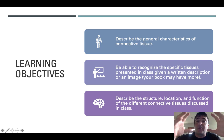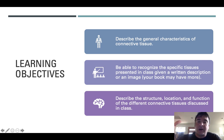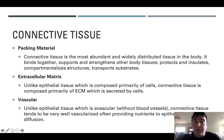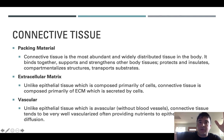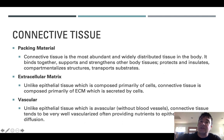I want you to be able to describe the general characteristics shared by most connective tissues, recognize the specific tissues given a histological image or a written description, and describe the structure, location, and function of different connective tissues. Connective tissue is sometimes described in textbooks as being like the packaging material of the body. It's the most abundant and most diverse of the primary tissue types, with many sub-classifications, and it essentially links things together serving a wide array of functional roles.